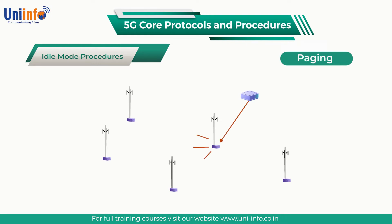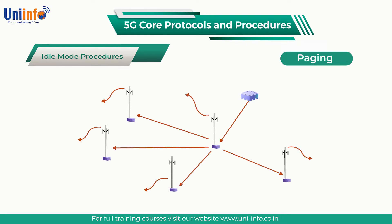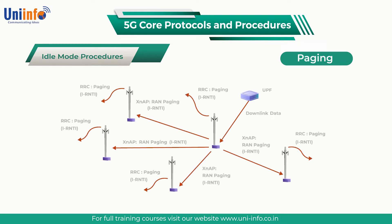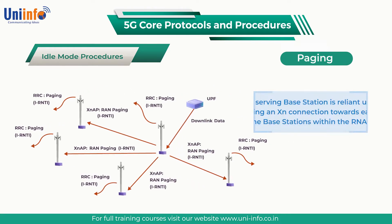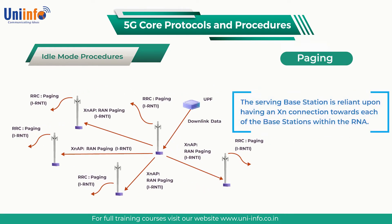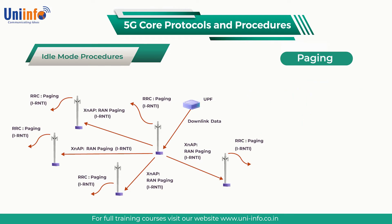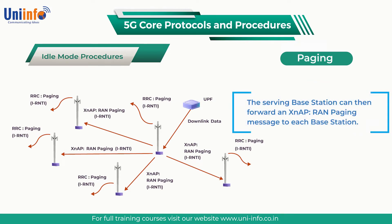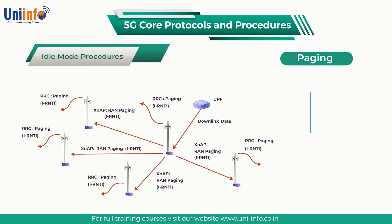The figure on the screen illustrates an example based upon the serving base station receiving downlink data from the UPF. The serving base station is reliant upon having an XN connection towards each of the base stations within the RNA. The serving base station can then forward an XNAP RAN paging message to each base station.